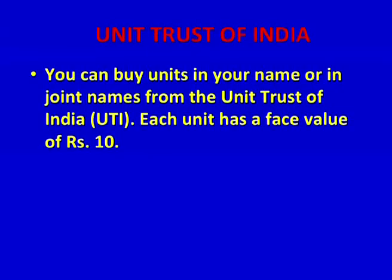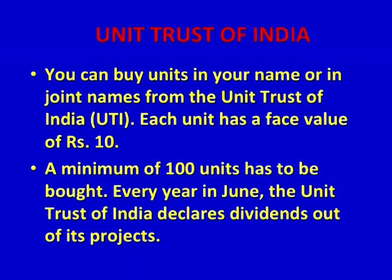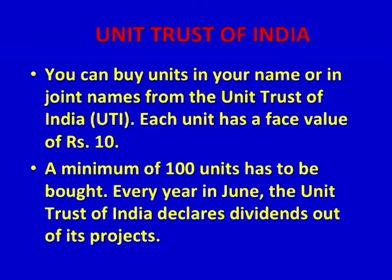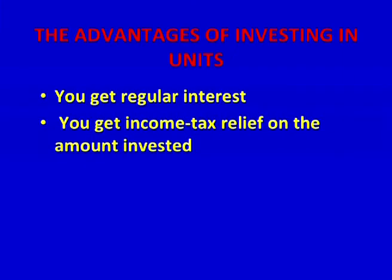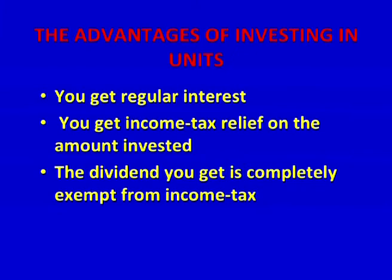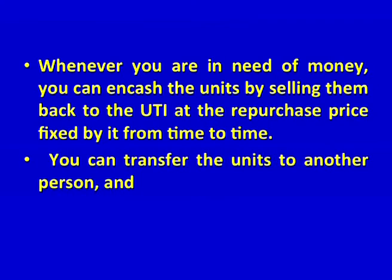Unit Trust of India (UTI): you can buy units in your name or in joint names from UTI. Each unit has a face value of rupees 10, and a minimum of 100 units must be bought. Every year in June, UTI declares dividends out of its profits. Advantages: you get regular interest, income tax relief on the amount invested, and dividends are completely exempt from income tax. Whenever you need money, you can encash the units by selling them back to UTI at the repurchase price. You can also transfer units to another person, and it is a safe investment.